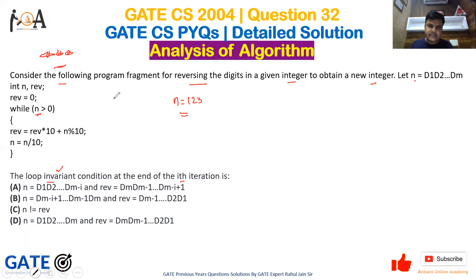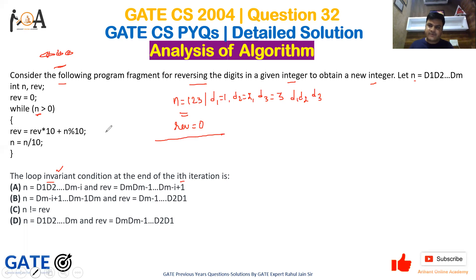In the first iteration, n is greater than zero, so we proceed. Initially n = 123 and rev = 0. We can say d1 = 1, d2 = 2, d3 = 3. Rev becomes 0 into 10 plus 123 modulus 10, which gives 3. And n becomes 123 divided by 10, which is 12. So after the first iteration, rev = 3 (which is d3) and n = 12 (which is d1 d2).